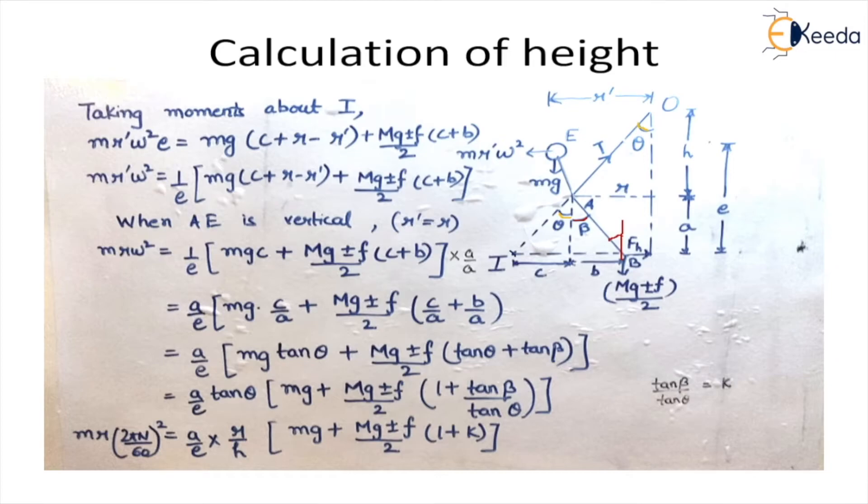Now we are taking moments about this point i which we are calling as the instantaneous center. So this is the centrifugal force which is M r' omega square r'. We are not taking r. This is the radius of rotation in this case when the balls are extended outward. That means this is the condition for load decrement and speed increment. So M r' omega square and its vertical distance, its perpendicular distance is this E.